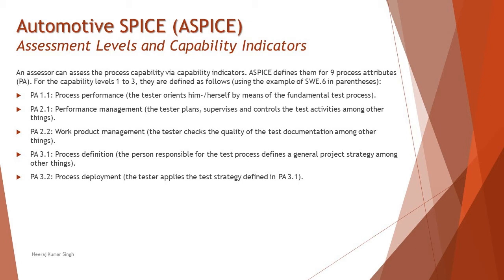The process attributes are defined as follows. Process Attribute 1.1 is Process Performance — the tester orients themselves by means of the fundamental test process. Process Attribute 2.1 is Performance Management — the tester plans, supervises, and controls the test activity, among other things. You can start feeling the difference between the different practices and process attributes. Process Attribute 2.2 is Work Product Management — managing the different work products created as part of the process; the tester checks the quality of test documentation, among other things.